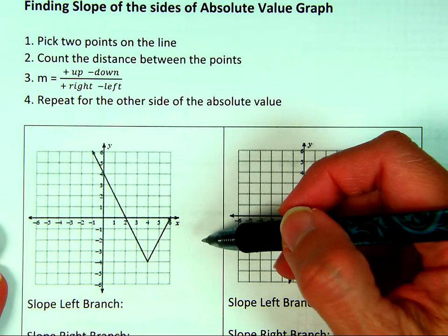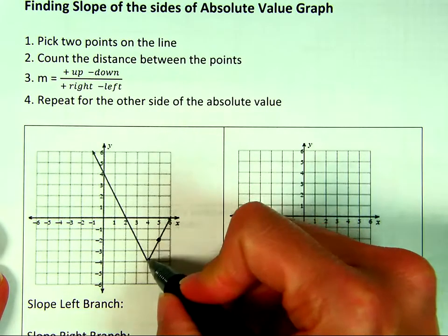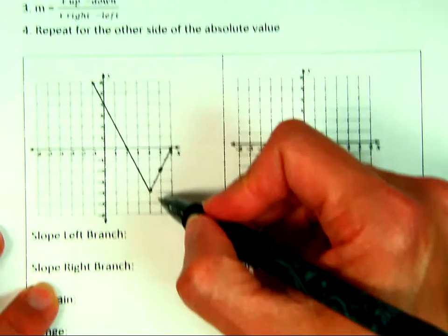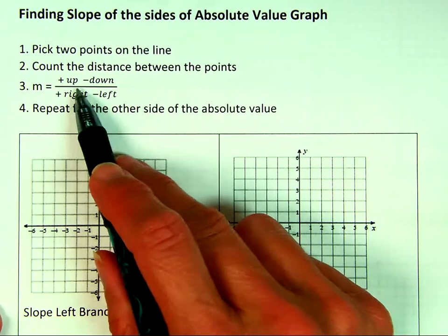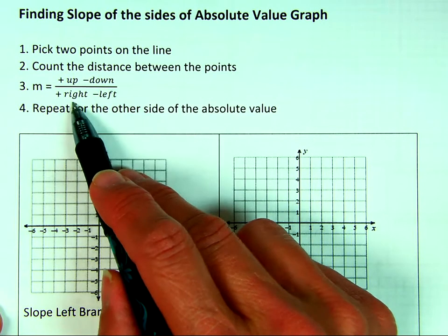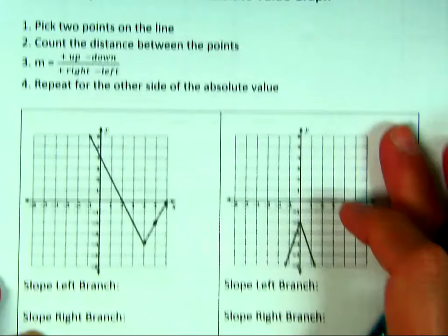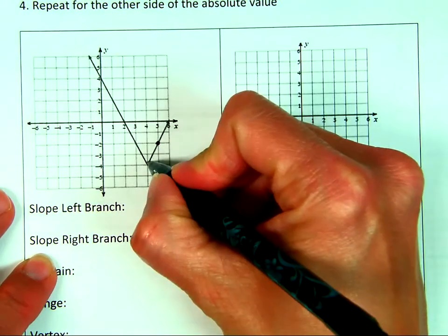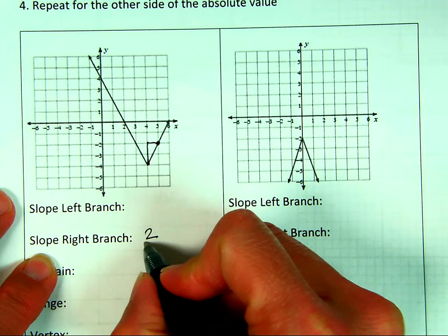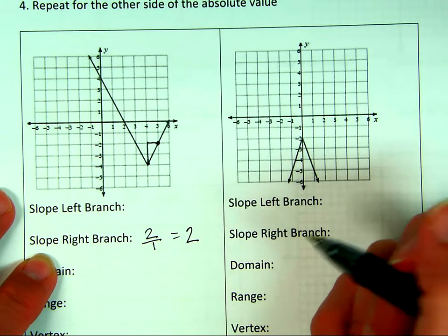When we want to find the slope, we pick two points — we want to make sure we pick points that are on the grid lines. I'm going to pick two points on the right side first. We count up and over: up and over tells me my slope. Up is positive, down is negative, right is positive, left is negative. From this dot to this dot, I go up two and over one, so the slope on the right side of the absolute value is two.